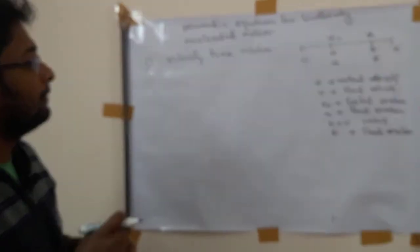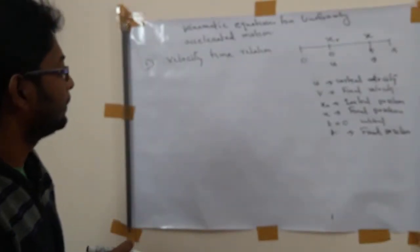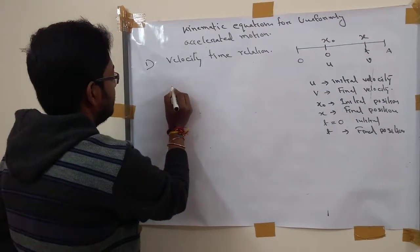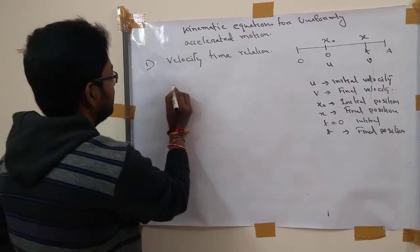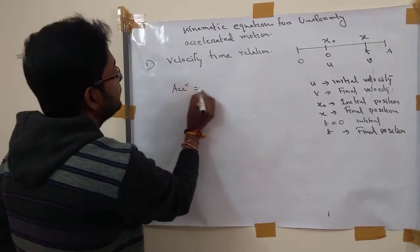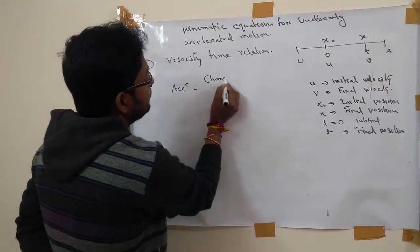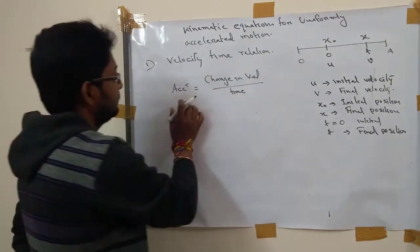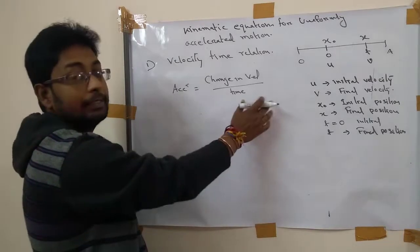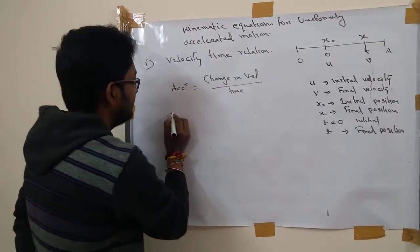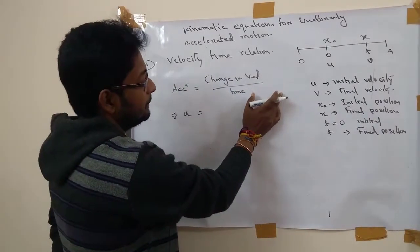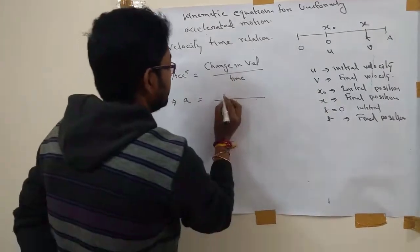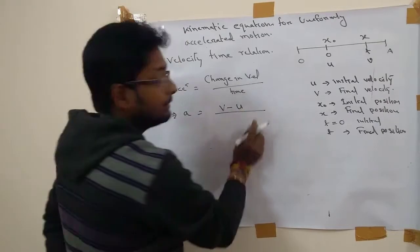So what is the formula for acceleration? We already know that the formula for acceleration is change in velocity per time. So acceleration A equals change in velocity, which means final velocity minus initial velocity, divided by time.